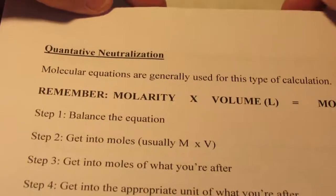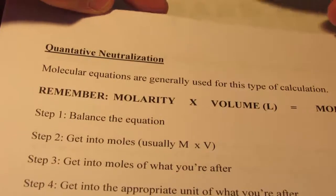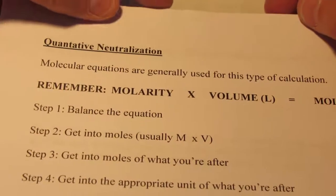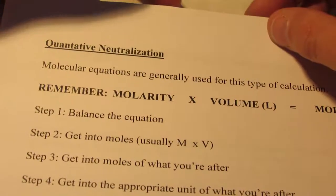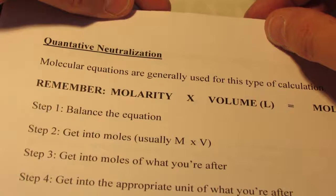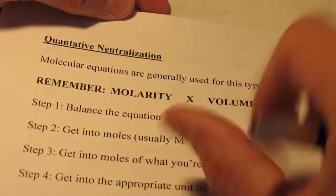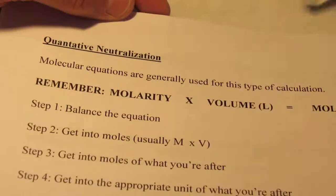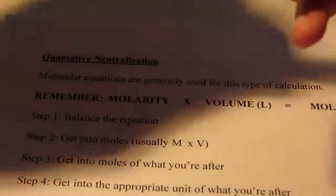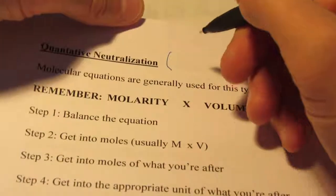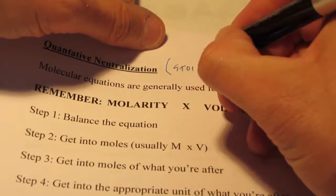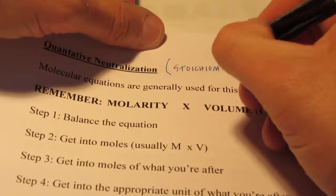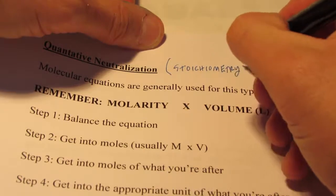Welcome back to Acids and Bases. We just finished up learning how to write neutralization reactions — both molecular, ionic, and net ionic. We learned about strong acids and strong bases and how strongs dissociate and weaks stick together. So now we're going to quantify this. We're going to do some quantitative neutralization, which is going to be a little bit of stoichiometry, which we've done quite a bit of this year.